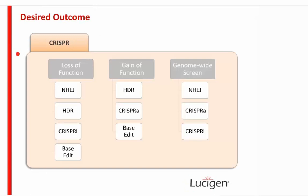Desired outcomes can be divided into loss of function, gain of function, or genome-wide screening. For loss of function — knocking out a gene — you would likely use NHEJ, but you could also use HDR to insert a stop codon at a specific location. CRISPR-i, or CRISPR interference, is a form of transcriptional repression of a gene of interest. Base editing, where you change a single nucleotide, could also create a loss of function. For gain of function, you'll probably use HDR to insert a new piece of DNA.